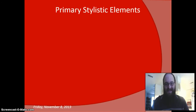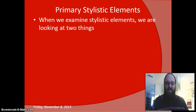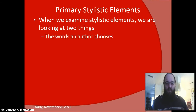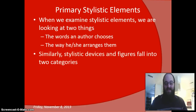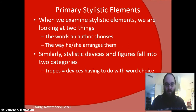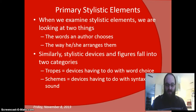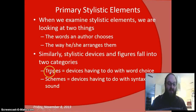Let's talk about what I mean by stylistic elements. When we examine them, we're really looking at just two things: the words an author chooses and the way he or she arranges them. Style analysis really isn't that tough when you put it that way. Similarly, stylistic devices fall into two categories: tropes, which are devices dealing with word choice, and schemes — or rhetorical schemes — which are devices dealing with syntax and sound. These two categories correspond to those two basic elements of style analysis.